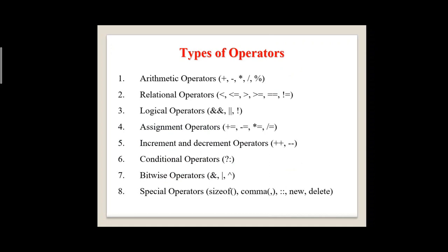The fourth one is assignment operators. Equal is an assignment operator. This operator is used to assign the value to the variable. The fifth one is increment and decrement operators. Plus plus is the increment operator and minus minus is the decrement operator. The increment operator is used to increase the variable value by one, and the decrement operator is used to decrease the variable value by one.